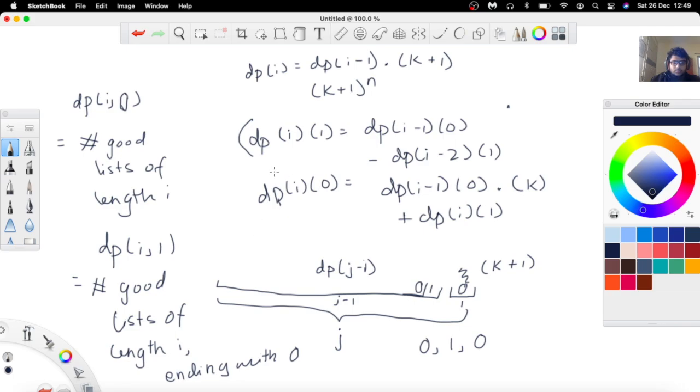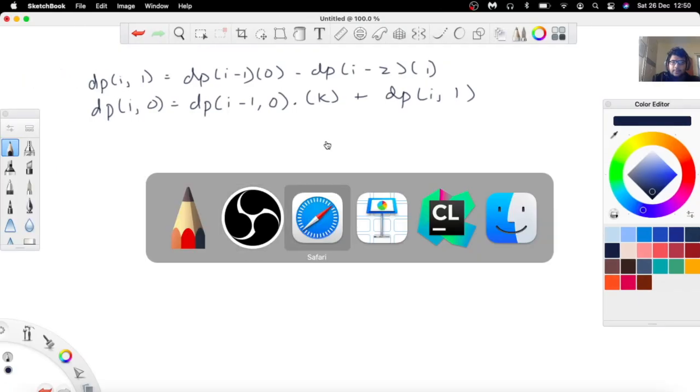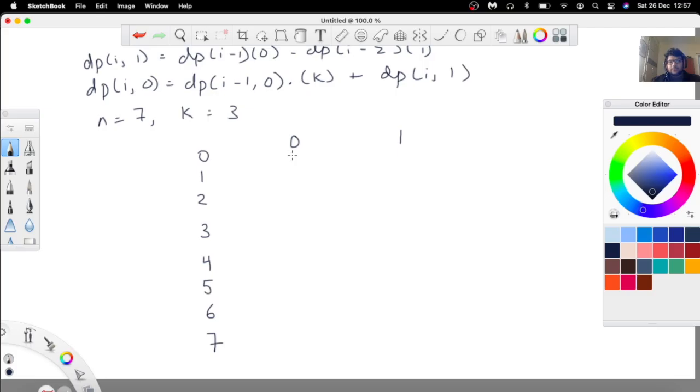So dp(i, 0) would be dp(i-1, 0) multiplied by k plus dp(i, 1), because if you're suffixing something like between 1 to k then this 0, 1, 0 combination is impossible, so we don't have to subtract anything there. And we've already calculated the number of good lists of length i ending with a zero over here so we can just add that directly instead of doing some extra calculations. So this is our dp(i). So if you want to write the recurrence down you can write it down. I'll just show you how you can solve a test case using this.